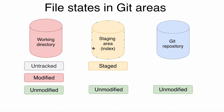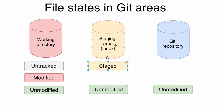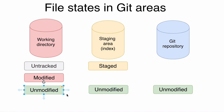When you add a new file to the working directory it becomes untracked, meaning untracked files are located only in the working directory and are absent in the staging area or git repository. After you stage an untracked file, its state becomes staged, and the file is now also located in the staging area. When you commit changes, the file's state changes to unmodified, and git writes the file into the git repository. It remains in the staging area and in the working directory. When all files are committed, all files will have unmodified state and be located in all three areas.